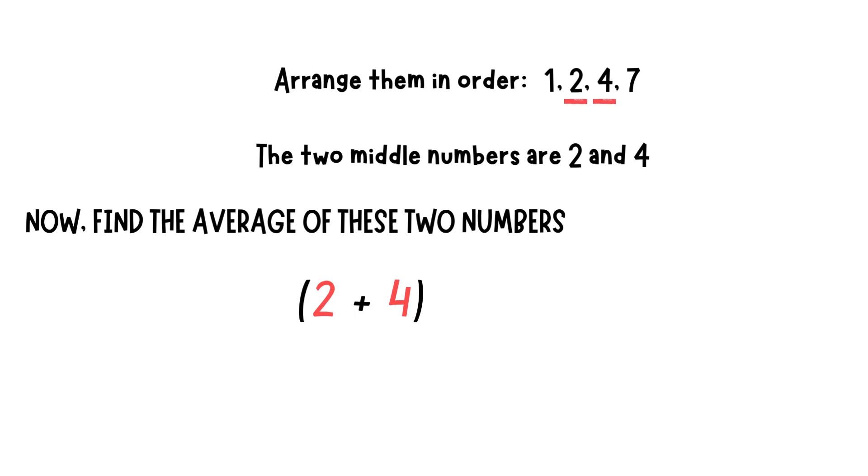You would do this by adding them up first. So, 2 plus 4 equals 6. Now divide by the total number of middle numbers, which in this case is 2.